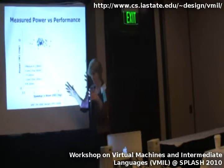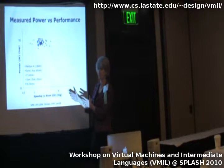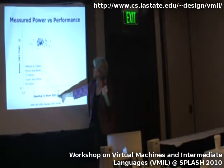The Atom is a simple in-order core built in 65 nanometer technology. [Audience question about whether it's 65 or 45 nanometer] — It's 65 nanometer; the Atom 230 is 65 nanometer. So that's where we started in 2003.